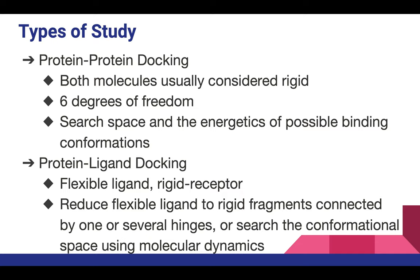There are two main types of study: protein-protein docking and protein-ligand docking. For protein-protein docking, both molecules are usually considered rigid, having more or less six degrees of freedom. The search covers the space and energetics of possible binding conformations to find the suitable binding fit between two proteins.